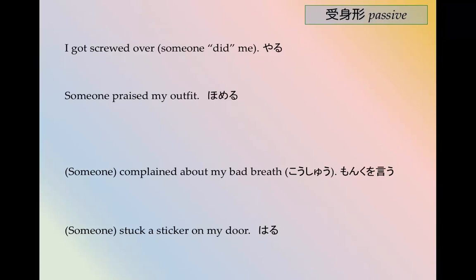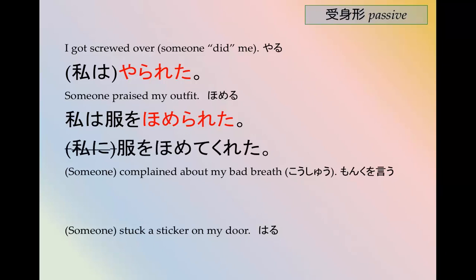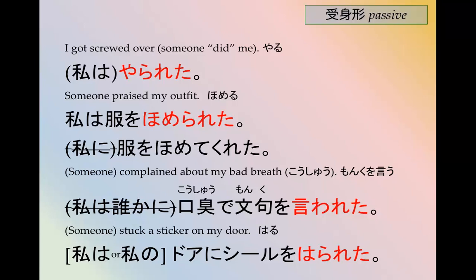Some more examples. I got screwed over — やられた, 私はやられた. Someone praised my outfit — 私は服をほめられた, 服をほめられた. You could also say だれかが服をほめてくれた — someone praised my clothes — but in the passive you were praised for your clothes: 私は服をほめられた. Someone complained about my bad breath — 口臭で文句を言われた. Someone stepped around my door — 玄関に誰かに入られた.